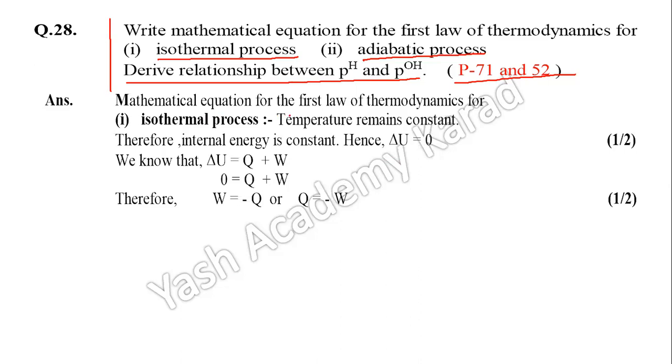Mathematical equation for the first law of thermodynamics for isothermal process: Isos means same and thermal means temperature. Where temperature of the system remains constant, the internal energy also remains constant, hence delta U equals 0. We know that delta U equals Q plus W. In isothermal process, delta U equals 0, so 0 equals Q plus W. Finally, W equals minus Q, or Q equals minus W.